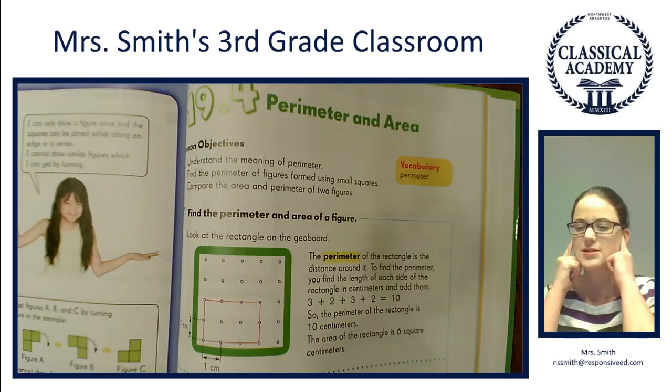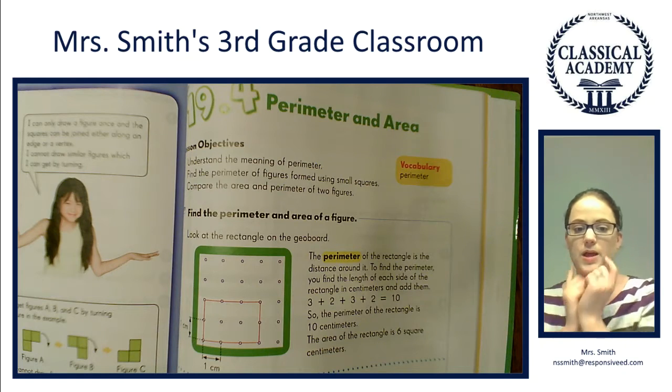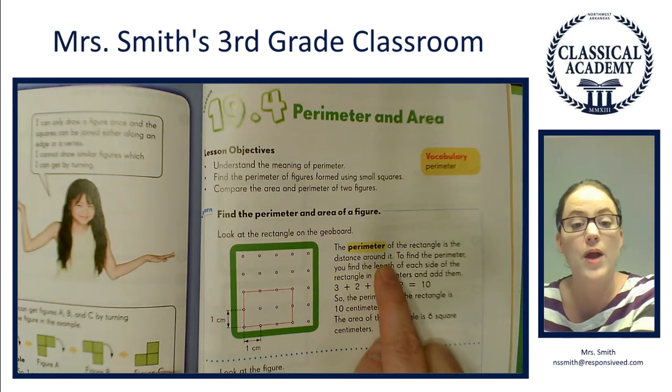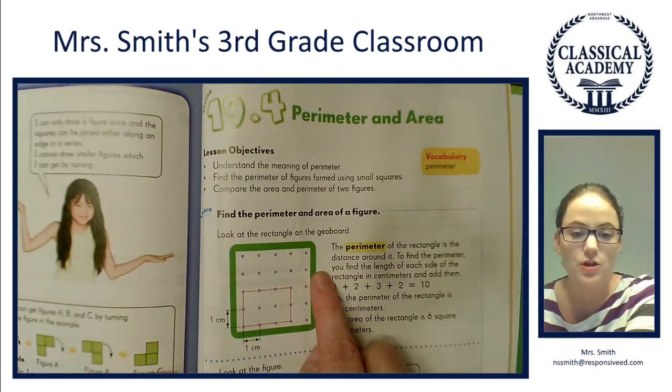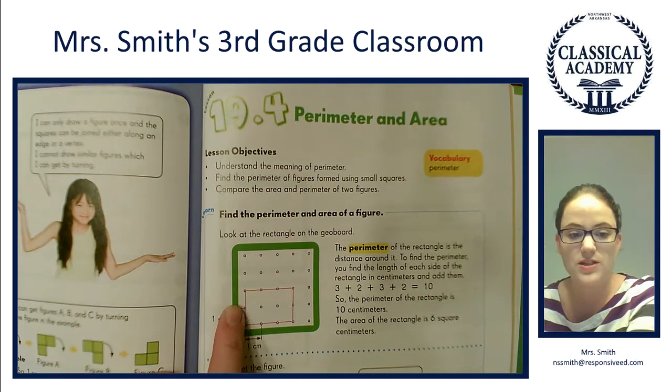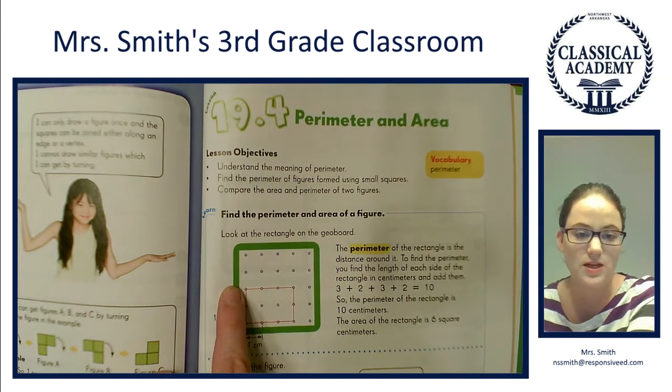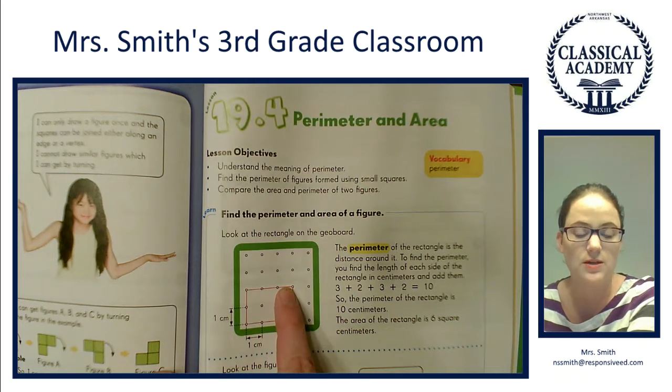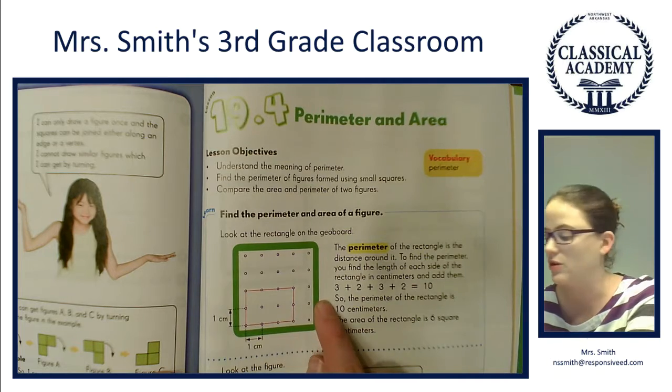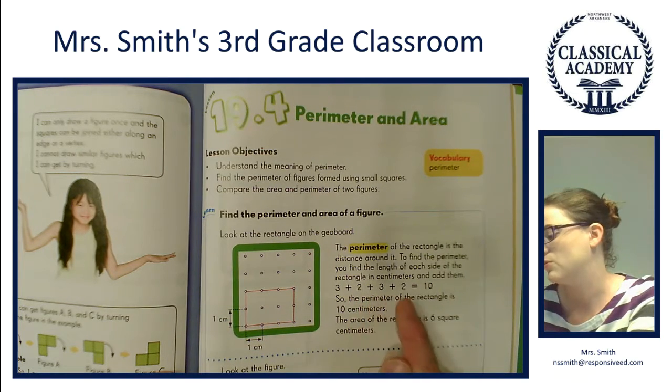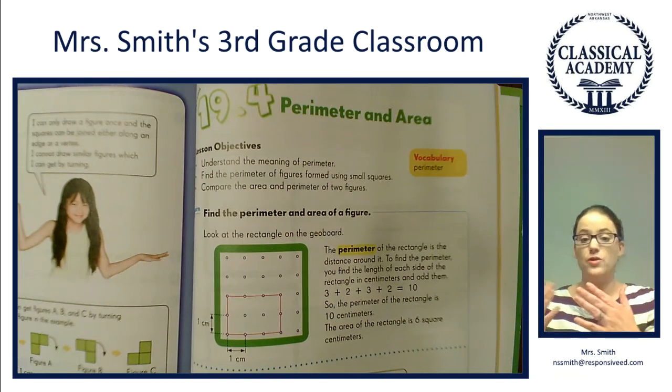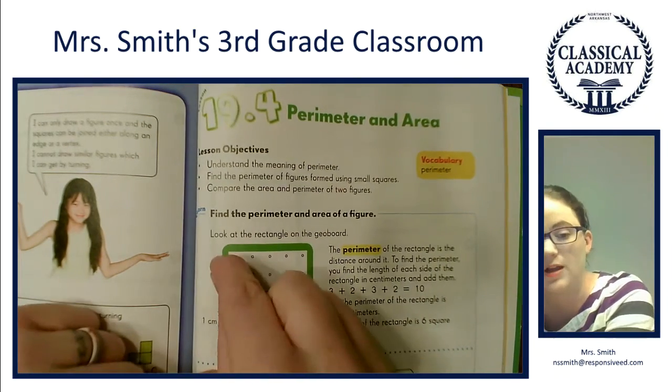Look at the rectangle on the geoboard. The perimeter of the rectangle is the distance around it. To find the perimeter, you find the length of each side and add them together. So this is 1 centimeter square, 1-2 centimeters, 1-2-3 centimeters, 1-2 centimeters, 1-2-3 centimeters. When we add that together, 3 + 2 + 3 + 2 = 10 centimeters. You don't write squared or anything like that because if I took a string and put it around the outside, I would have one long 10-centimeter string.